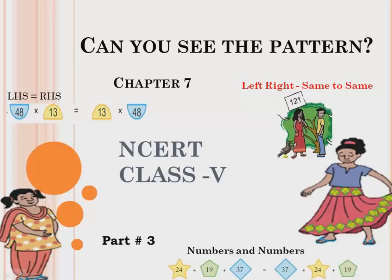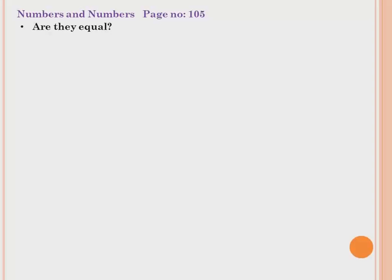Welcome to NCRT Class 5 Chapter 7, 'Can You See the Pattern?' Part 3 — Numbers and Numbers, page number 105.